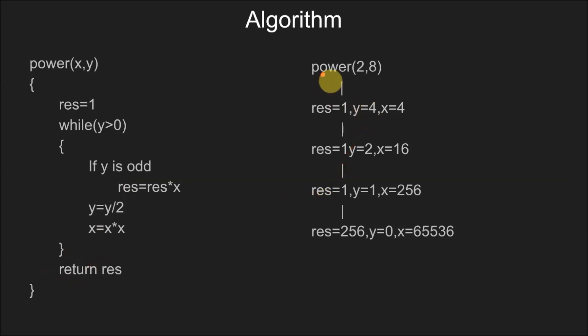For example, if we run the function power with values 2 and 8, first time the value of result is 1, y is 4, x is 4. Next time, result is 1, y is 2, x is 16.